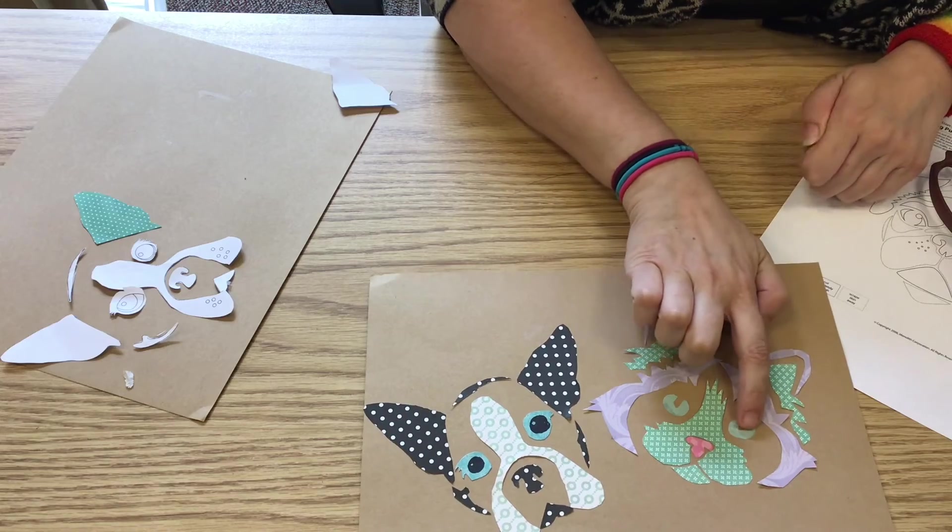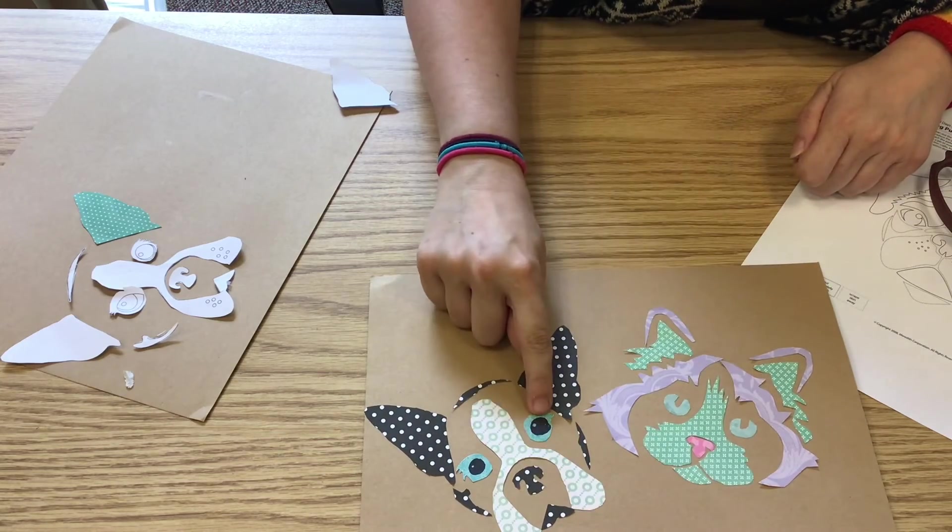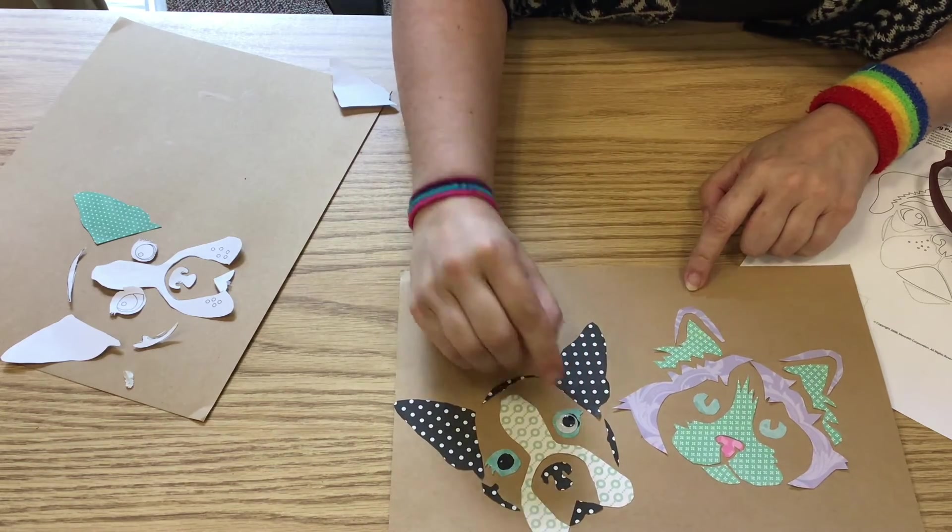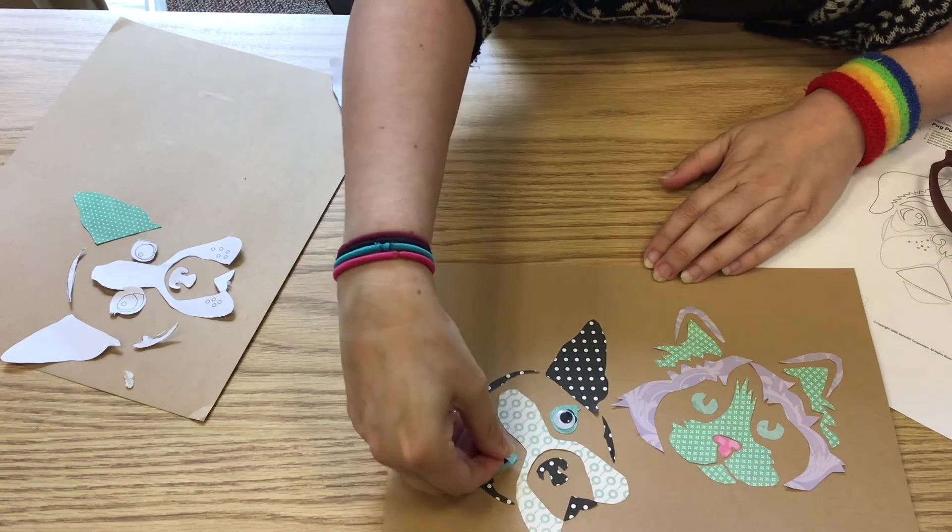Or if you're like me, you can add some googly eyes. And then you can leave them together like that, or if you leave enough space, you can cut that down the middle and have one pet portrait each to keep or to give away.